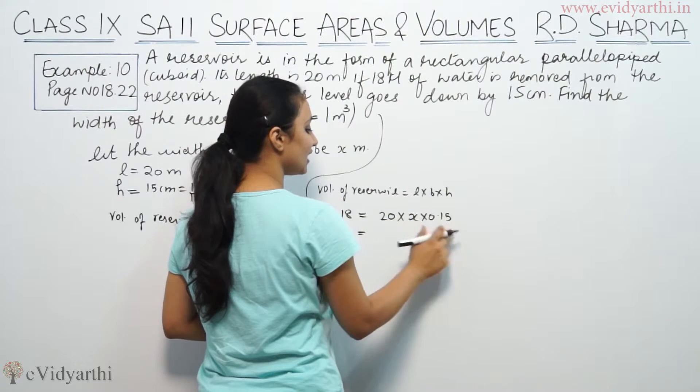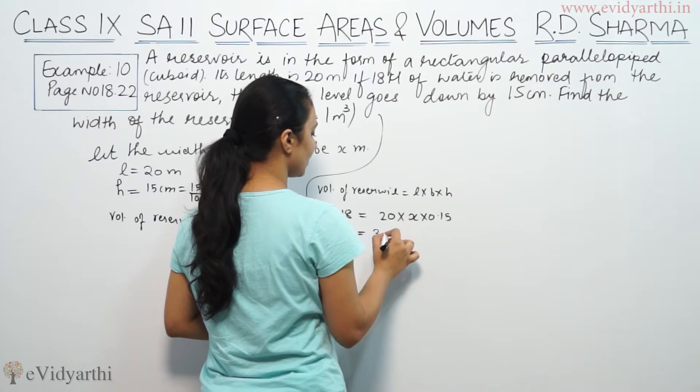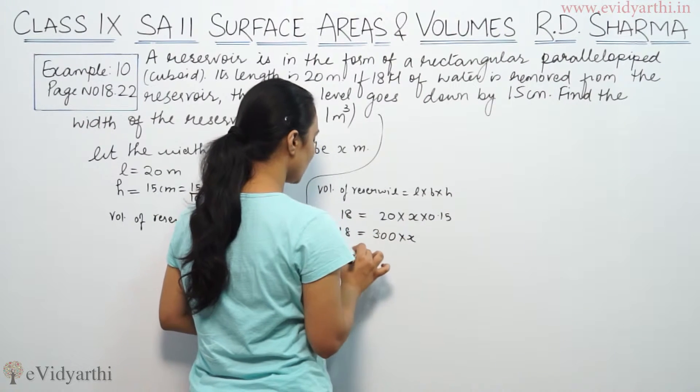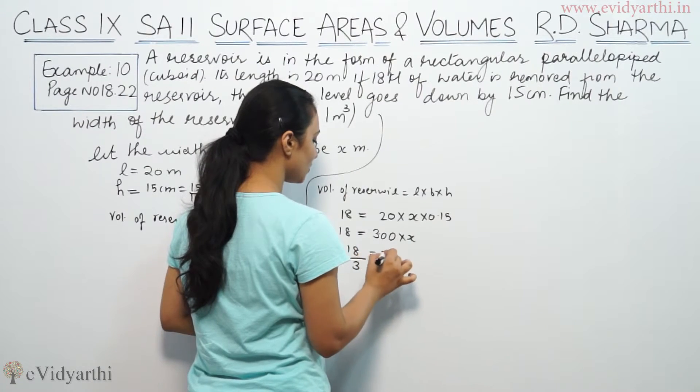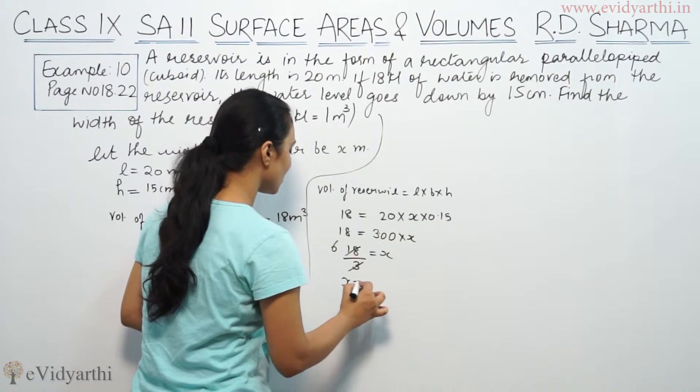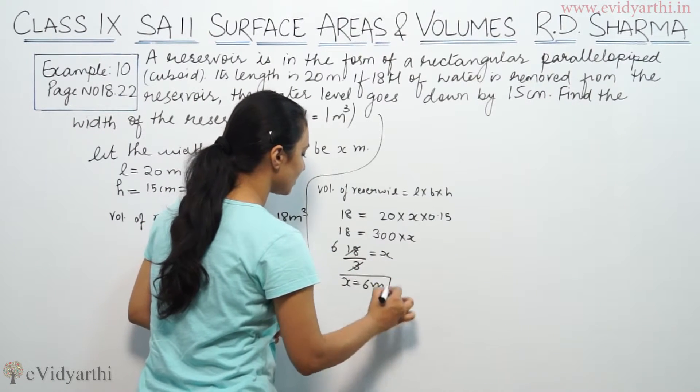So 18 is equal to 20 into 0.15, that means 3 into x. So 18 by 3 is equal to x. So x is equal to 6 meters.